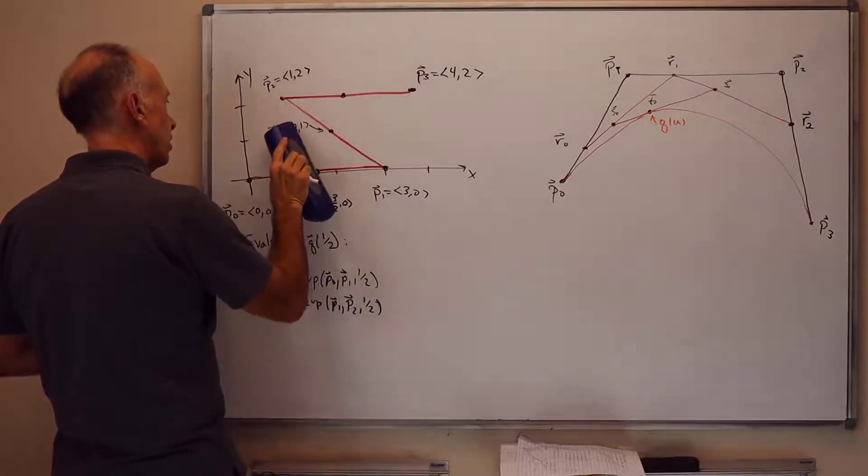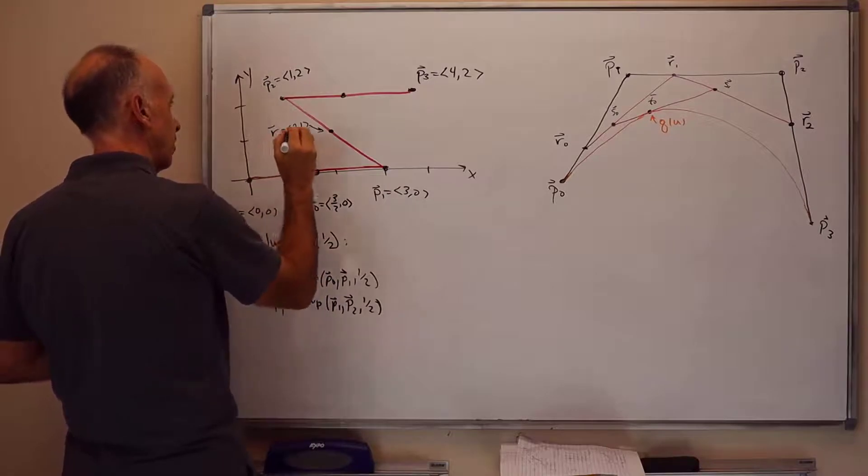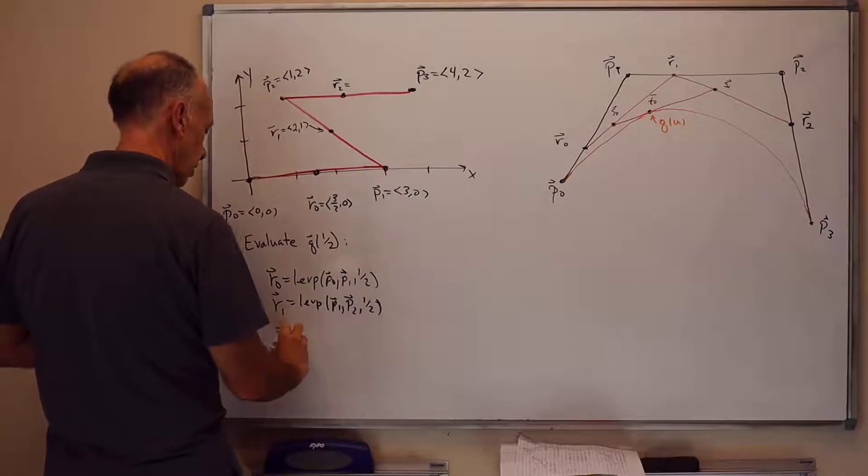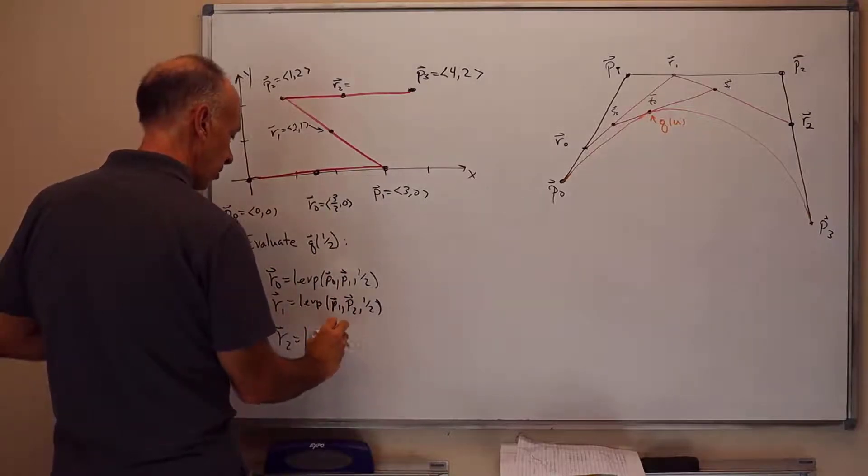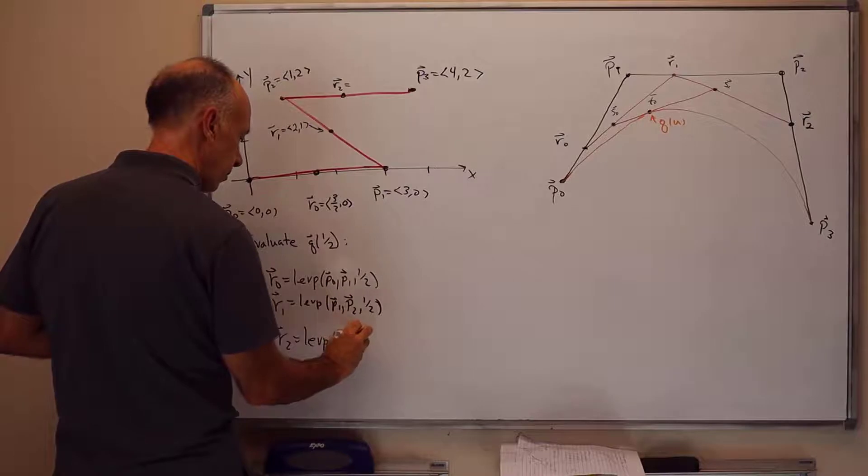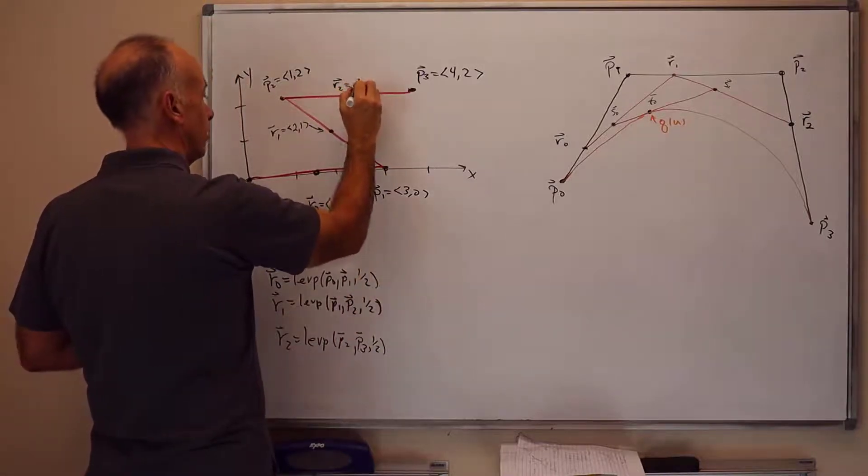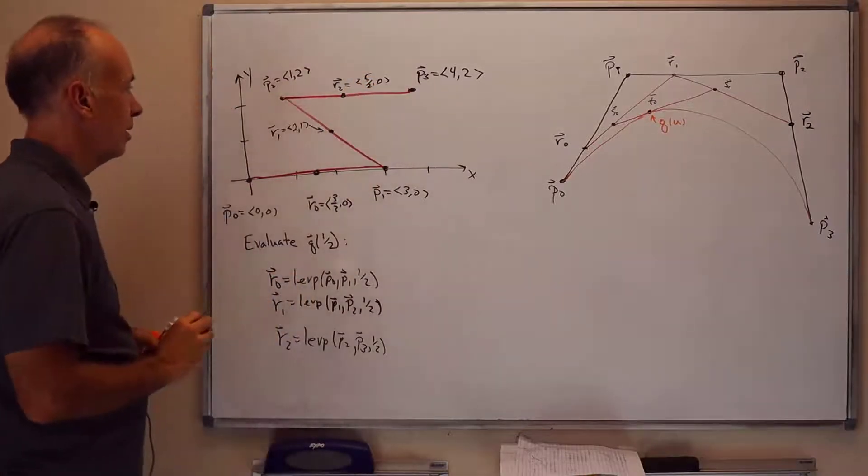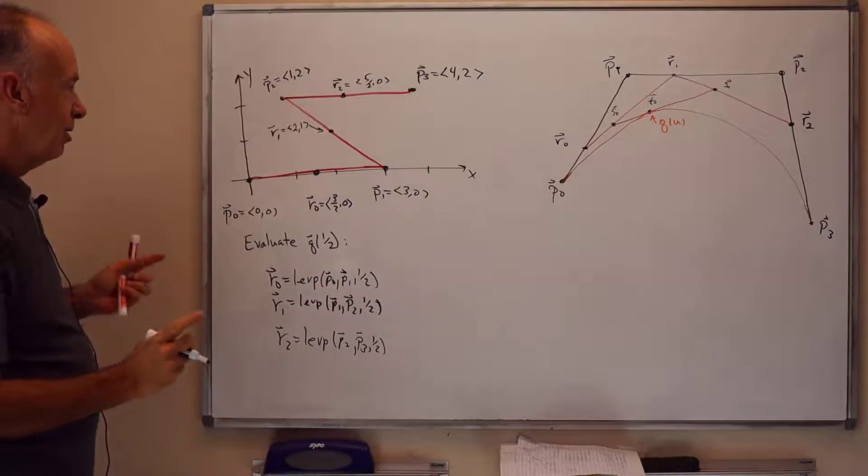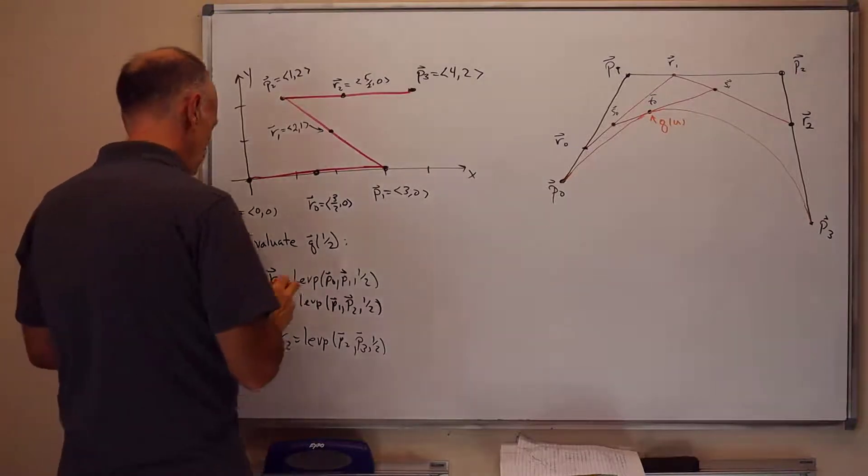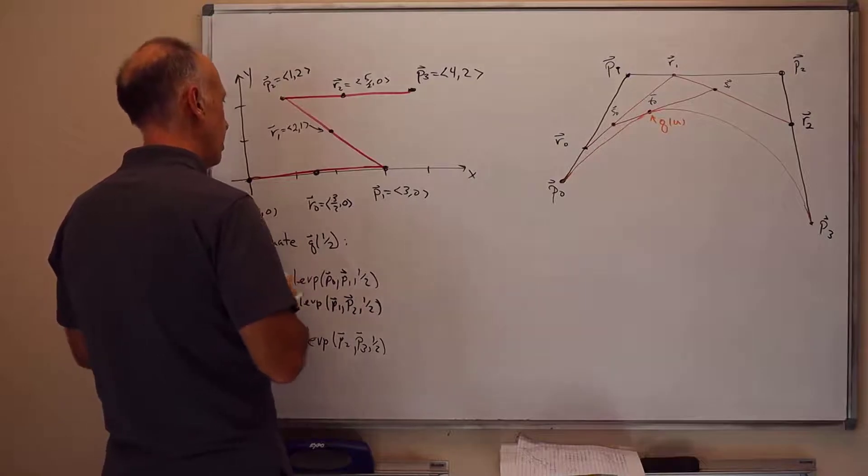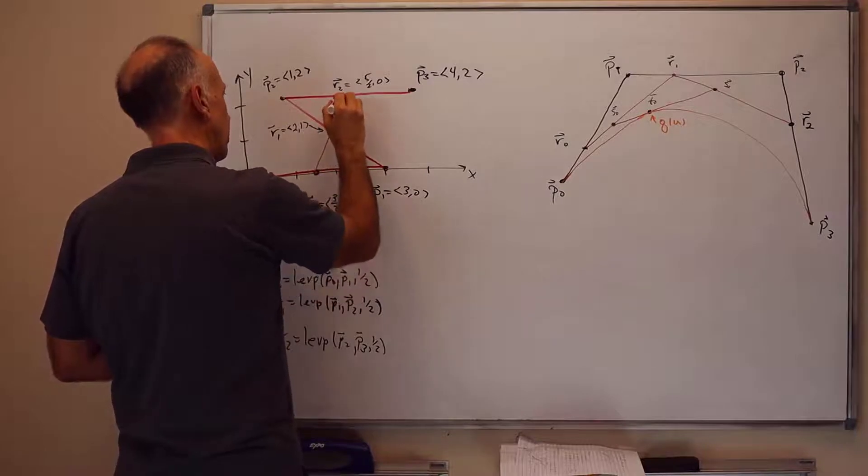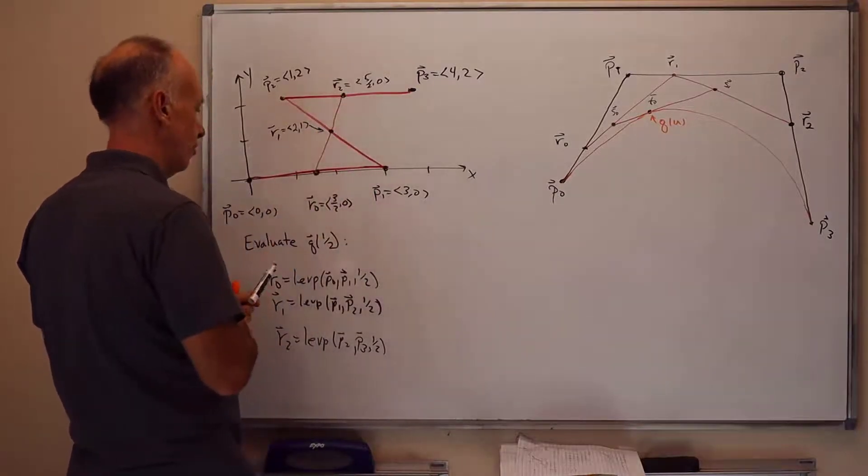And R2 will be the midpoint of the line segment from P2 to P3. So that's equal to (5/2, 2). We've got a lot of symmetry going on in here. So things are going to turn into straight lines going forward. We now draw the straight line segment connecting R0 and R1, and the straight line segment joining R1 and R2.